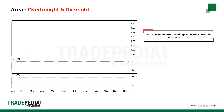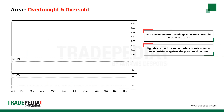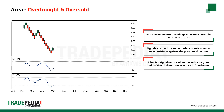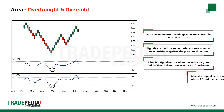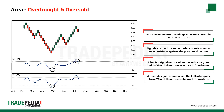Extreme momentum readings indicate a possible correction in price. These signals are used by some traders to exit or enter new positions against the previous direction. When using IMI and RSI, a bullish signal occurs when the indicator goes below 30 and then crosses above it from below. A bearish signal occurs when the indicator goes above 70 and then crosses below it from above. If more than one indicator gives the same signal, the stronger it becomes.